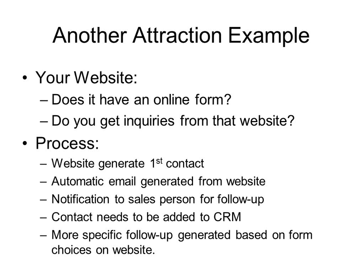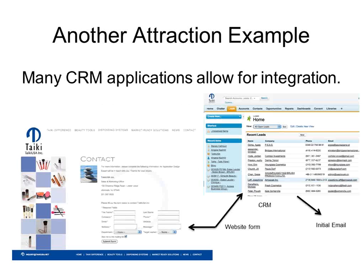Here's an example from one of our clients — a beauty company. When they get an inquiry into their website, it goes directly into one of their CRM systems. The CRM sends the email automatically: it came through the website, went into the CRM, the CRM has that trigger to send it out, the contact is created, and they know there's been a first contact with that individual. They can follow up from there and initiate the rest of their process.